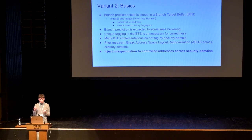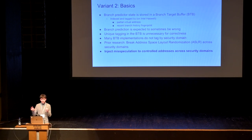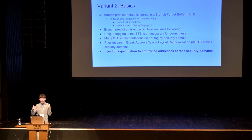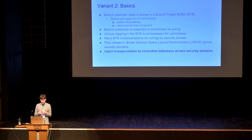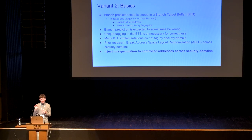There was prior research that used this to break address-space layout randomization across security domains — for example, having two user-space processes where the attacker times branches to infer the branch target buffer state, revealing where code is located in the victim context. You can also do this from inside a virtualization guest to figure out where the hypervisor is located in host memory.